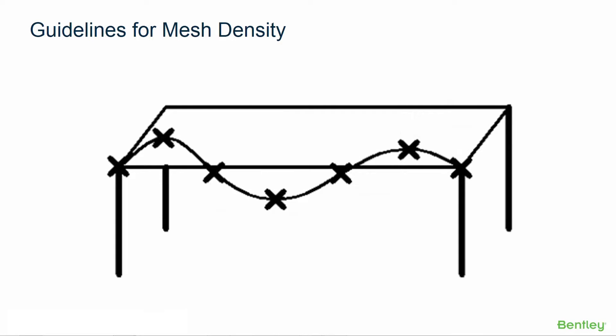Now that we have established the need for a mesh of plate elements in most practical situations, the next item to consider is the mesh density. The guiding concept should be to use a mesh that is as coarse as it can be while still providing adequate results. In general, coarser meshes will be stiffer than finer meshes and the analysis results should converge towards a theoretical solution as the mesh density increases.